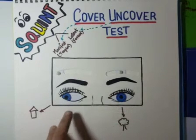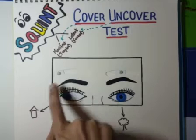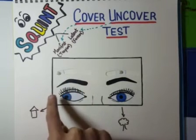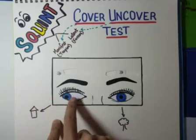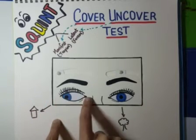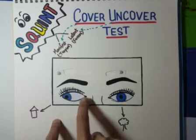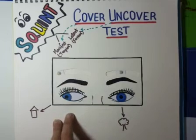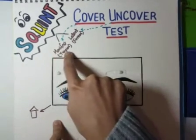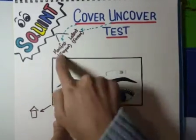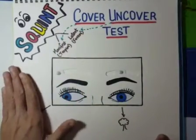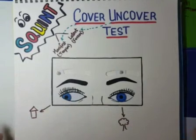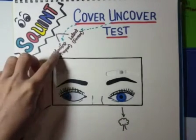The patient had a positive cover test, which shows that he has manifest squint in his right eye — which is exotropia, because the eye has deviated outwards. If it deviated inward, we call it esotropia. If it deviated upward, hypertropia. If downward, hypotropia. The suffix '-tropia' is used because the patient has manifest squint, since the cover test was positive. We then perform the cover-uncover test on the other eye and nothing happens.